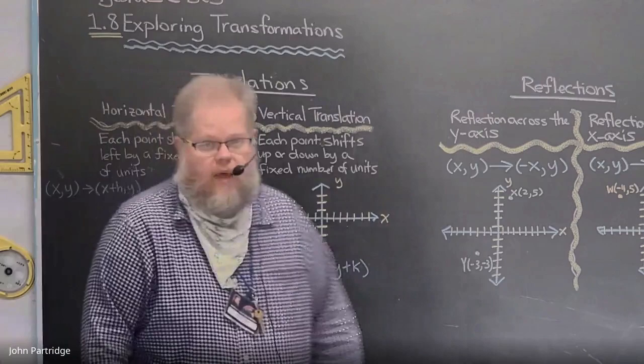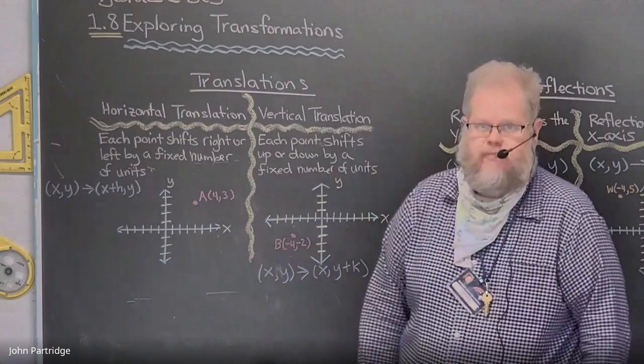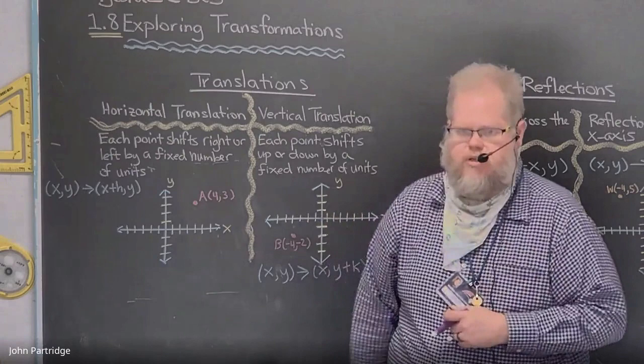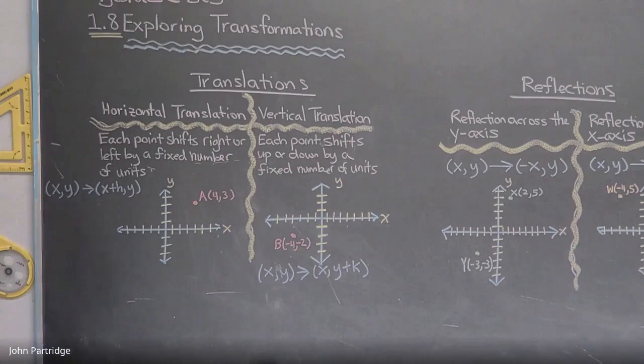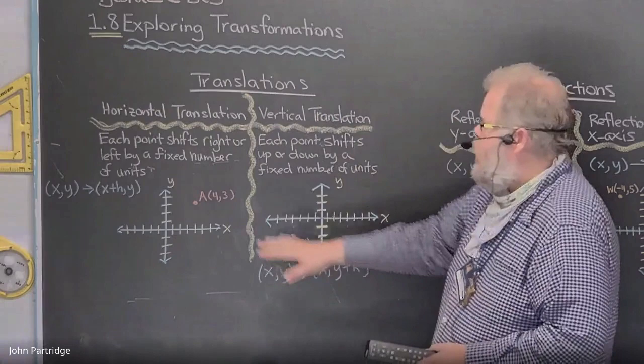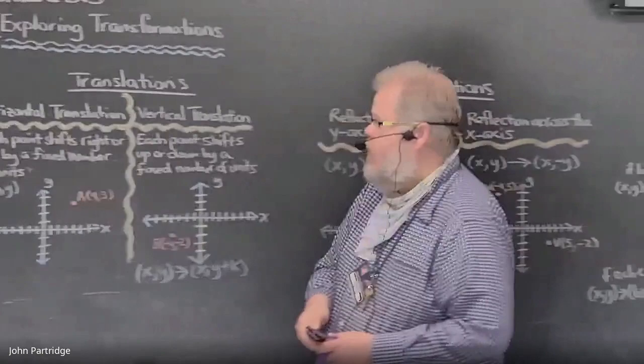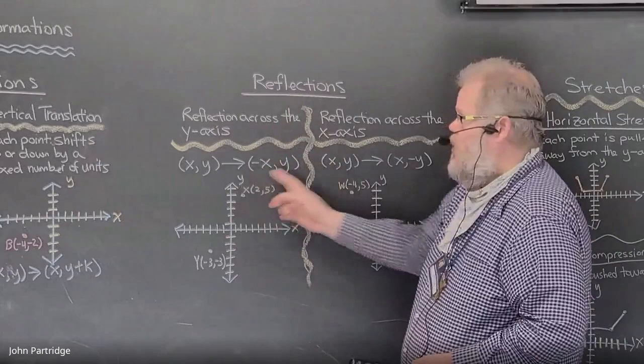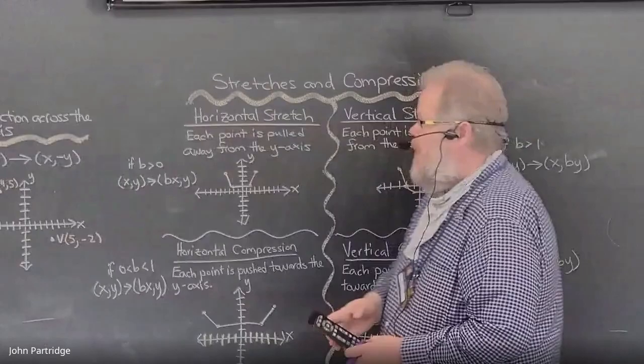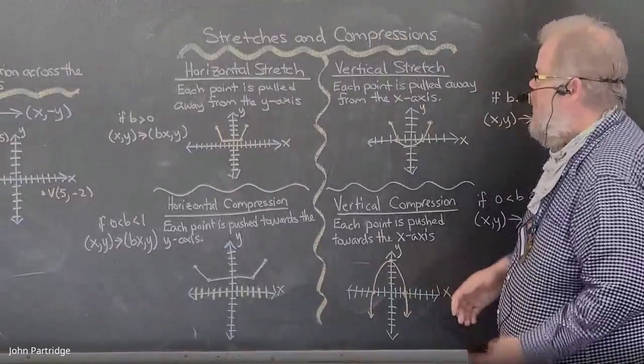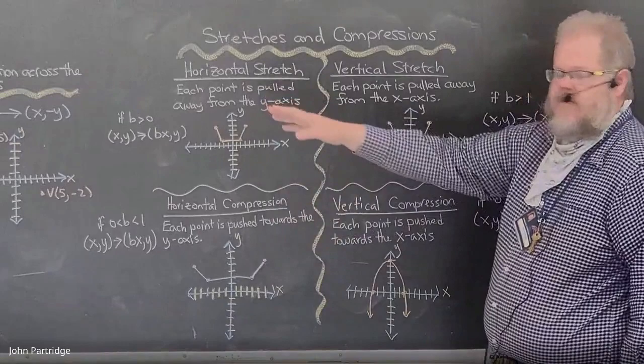This is Algebra 2 at BCS and today's lesson is called Exploring Transformations. There are three general kinds of transformations to talk about today. The first kind is called a translation, broken up into two separate parts. The next kind is called a reflection, also broken up into two parts. The last category is called stretches and compressions, broken up into four parts. So today we have two, two, and four across those three categories.